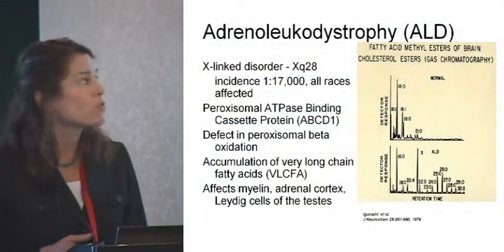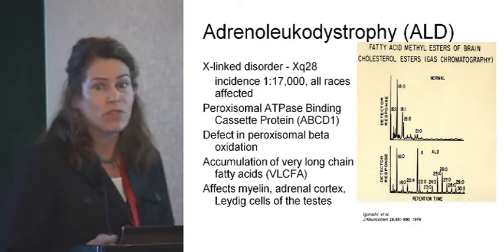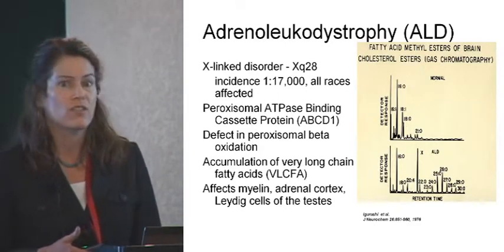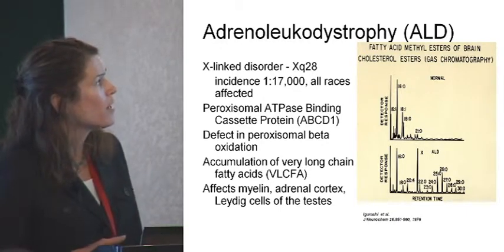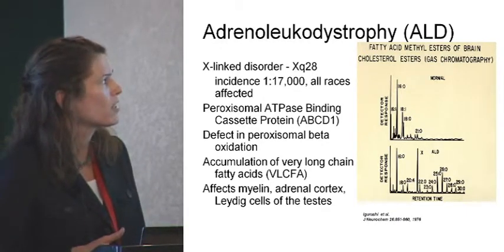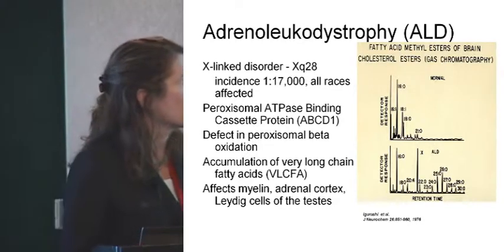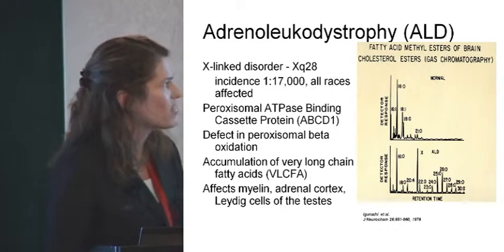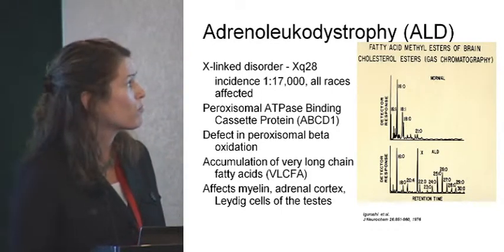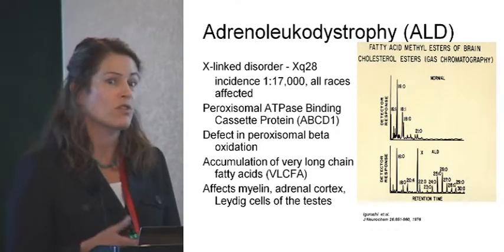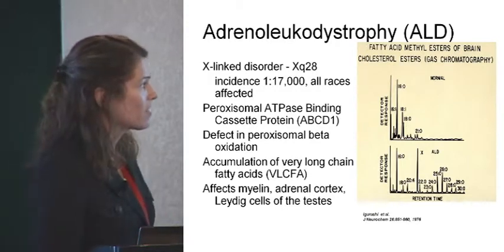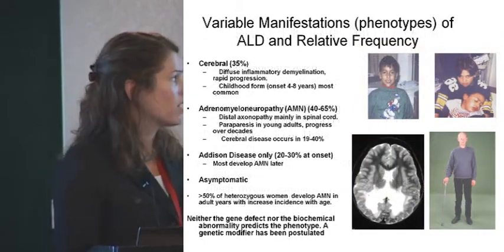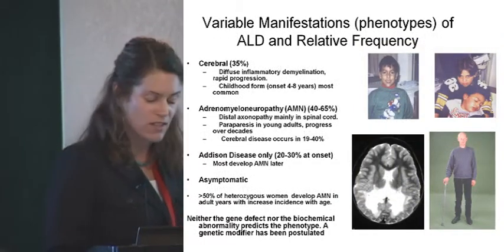ALD is an X-linked disorder. Its incidence is really similar to PKU, about 1 in 17,000, and it's pan-ethnic in distribution. It's caused by a problem encoding a gene on the ABCD1, the peroxisomal ATPase binding cassette protein, that causes a defect in peroxisomal beta oxidation with an accumulation of very long chain fatty acids. It affects many systems but predominantly myelin, adrenal cortex, and Leydig cells of the testes.